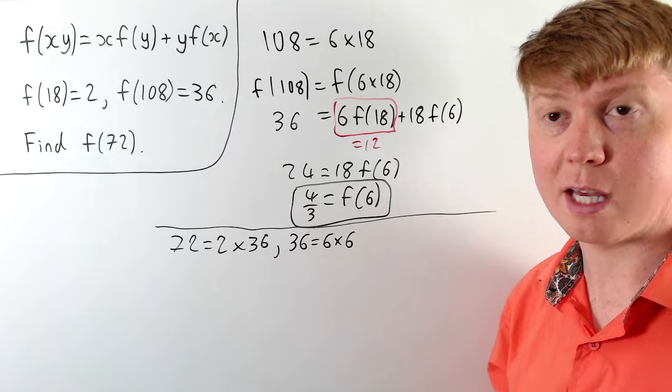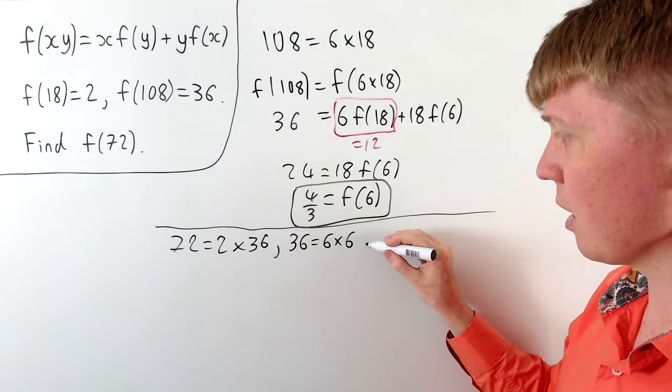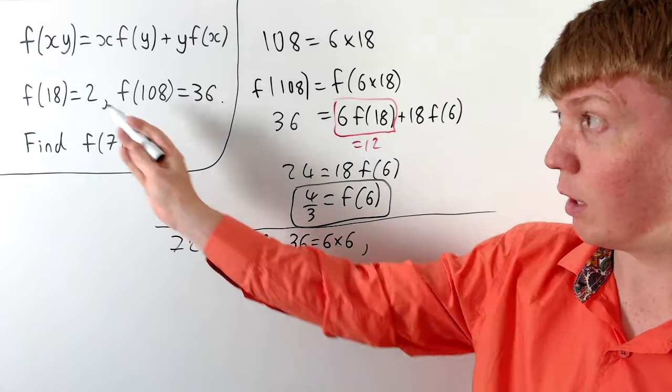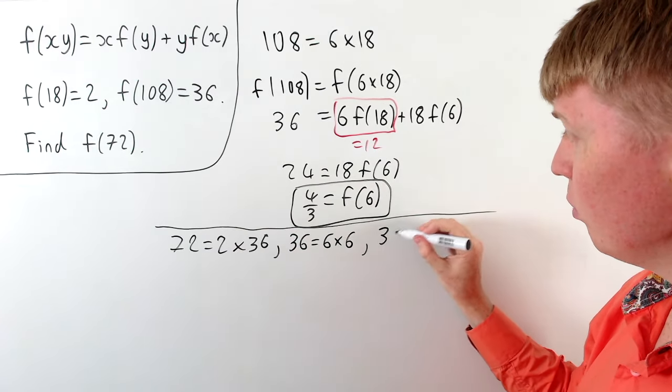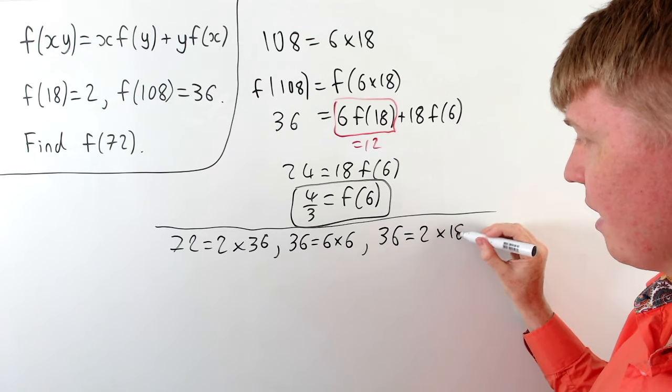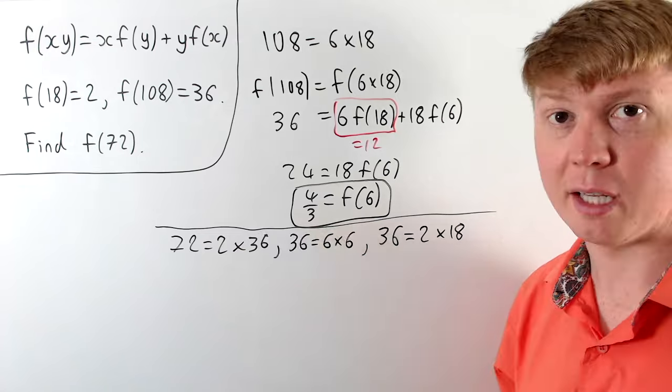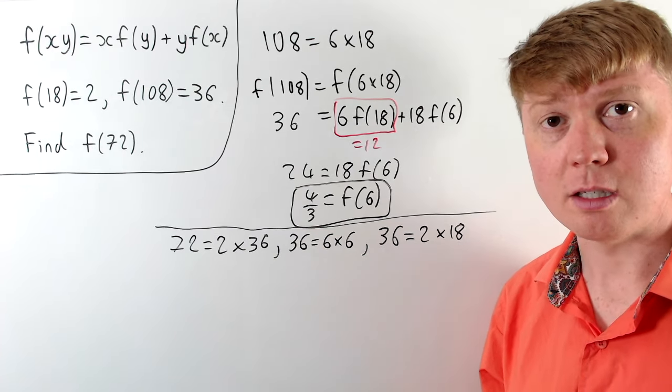So now that we know f of 6, there's a path to finding the value of f of 36. And then once we've found the value of f of 36, because we know the value at 18 as well, we can use the fact that 36 is 2 times 18 to give us the value of f at 2, then eventually we'll be able to combine these to make the value of f at 72.